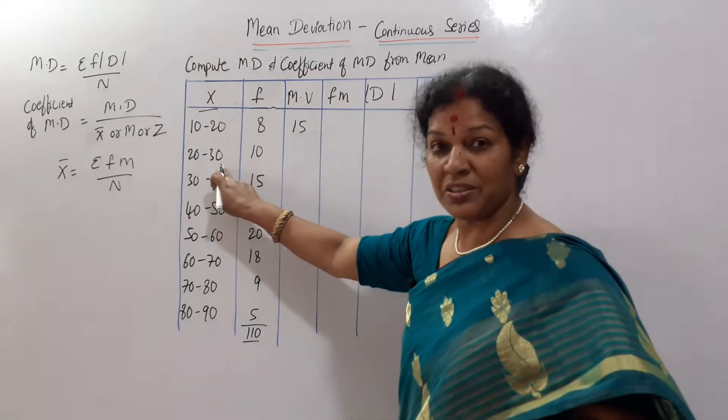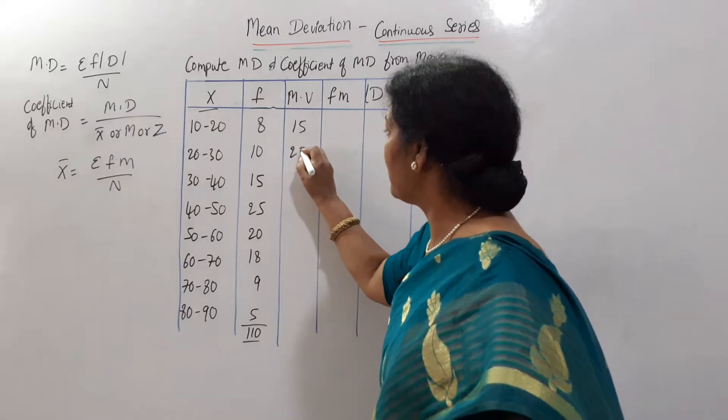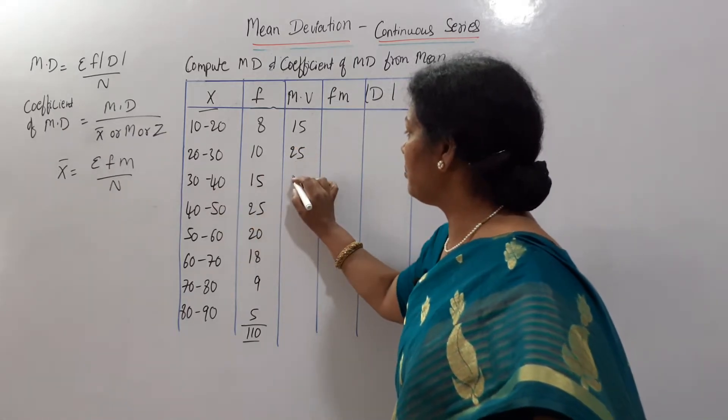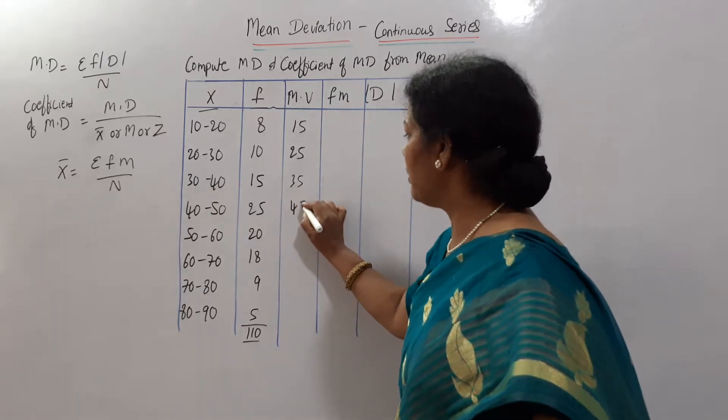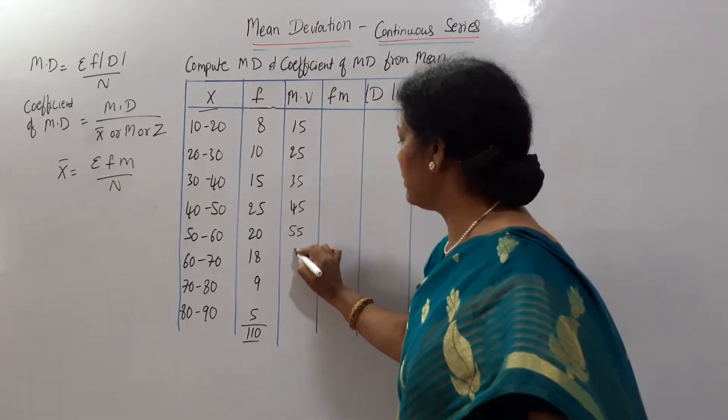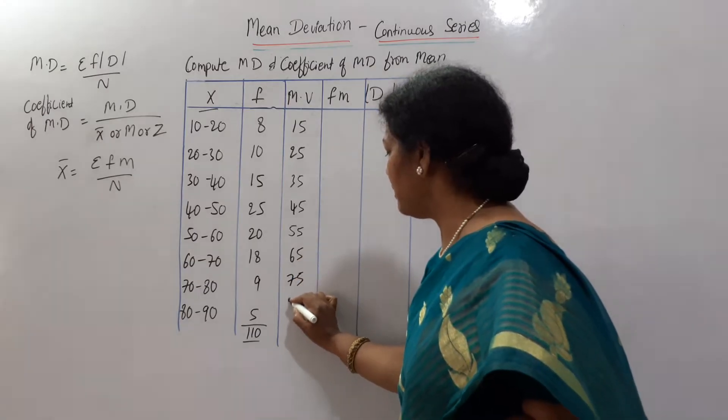And here, 20 plus 30, 50. 50 divided by 2, 25. Like this, 70 divided by 2, 35. In the same way, you will get all the numbers 45, 55, 65, 75 and 85.